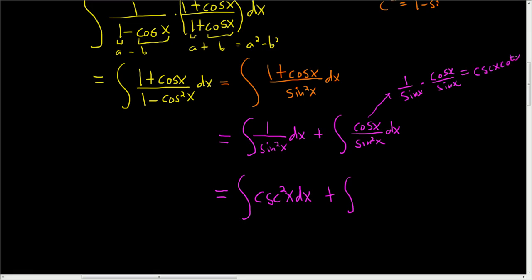So all of this is just cosecant cotangent. So this is cosecant x cotangent x dx.